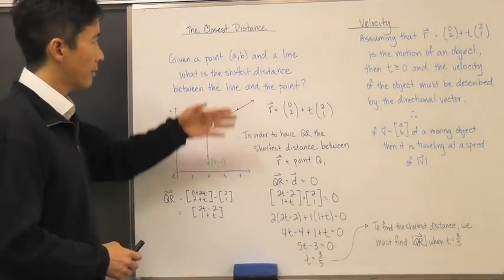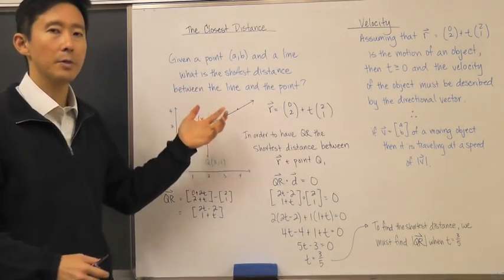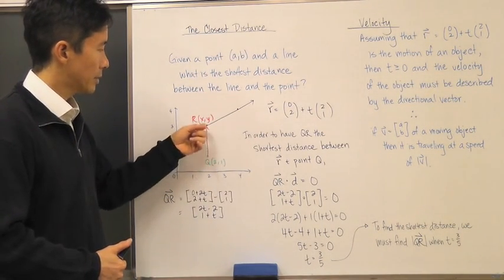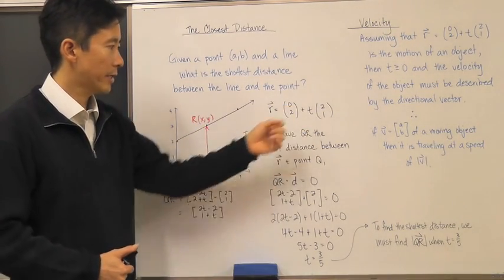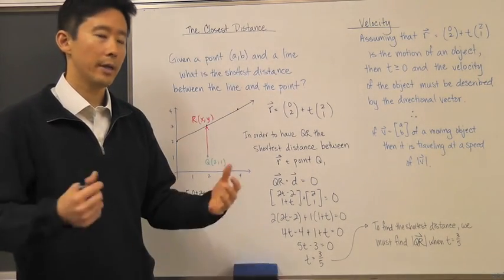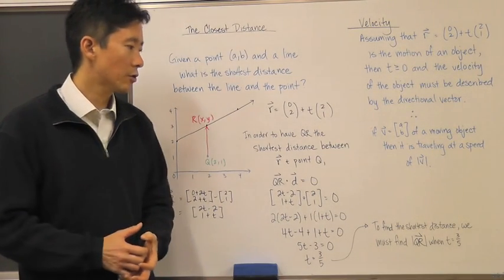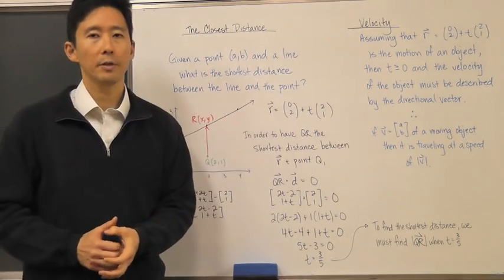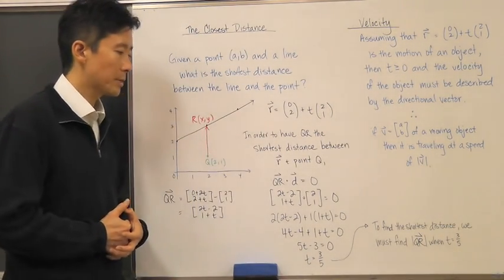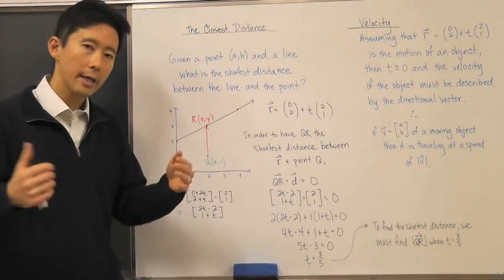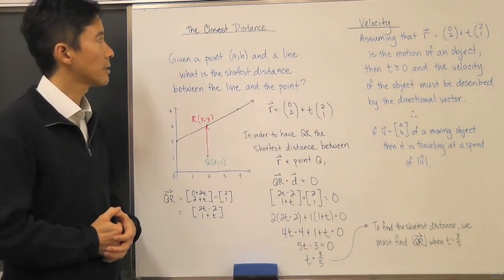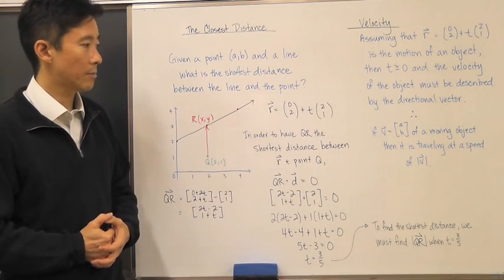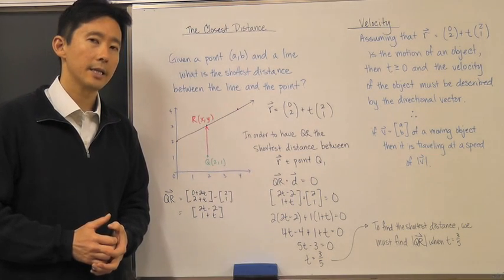So we can now find the closest distance using vector methods: the vector from the point to the line, dotted with the directional vector of the line, must equal zero. That lets us calculate the shortest distance between the point and the line. We can also interpret the line equation as describing the motion of an object. We'll do problems in class to work out any kinks on closest distance and velocity problems, aiming for high accuracy and precision. See you next time!